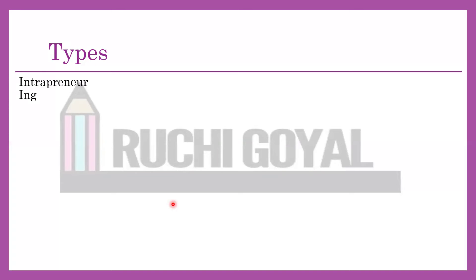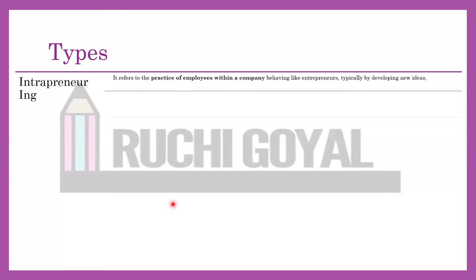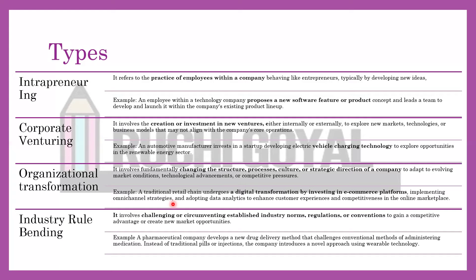Now, what are the types? Sabse pehle aata hai Intrapreneuring. Intrapreneuring mein kya hota hai — it refers to the practice of employees within the company, hum unhe promote karte hain. Corporate Venturing — it involves creation and investment into new ventures. For example, an automotive manufacturer invests in a startup developing electric vehicles. Tata ne abhi naye EV cars banana start kiye — unhone investment ki naye venture mein, either internally or externally.